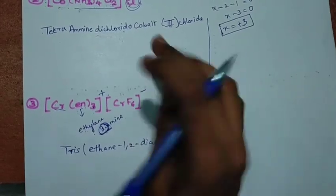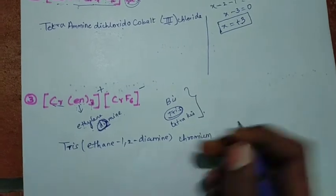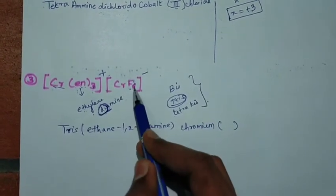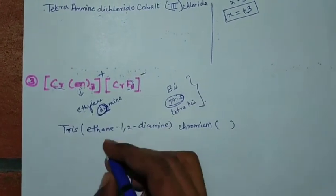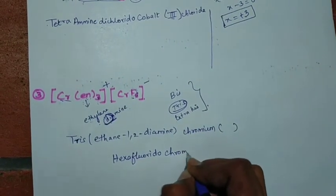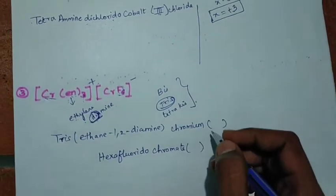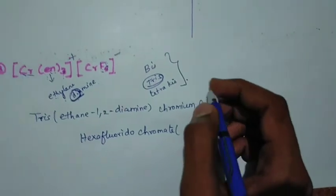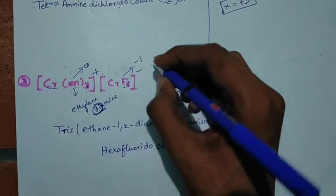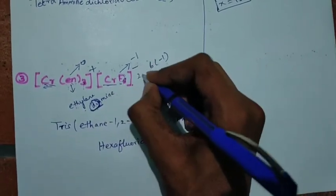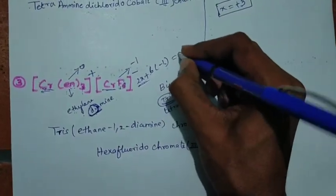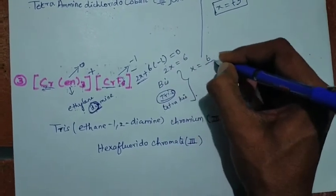Next, we have a chromium complex. We call it by its oxidation state. The complex has 6 fluorine ligands — so 'hexafluorido'. The complex is a minus (anionic) complex, so chromium becomes 'chromate'. Let's find the oxidation state: ethylene diamine is neutral (0), fluoride is 6 × (−1). So 2x + 6 × (−1) = 0, giving 2x = 6, x = +3. Chromium is +3, written as chromate(III).